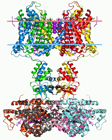Rapidly inactivating channels include KVα1, KV1.4 (KCNA4), KVα3, KV3.3 (KCNC3), KV3.4 (KCNC4), KV4.1 (KCND1), KV4.2 (KCND2), and KV4.3. Outward rectifying channels include KVα10, KV10.2, and KCNH5.